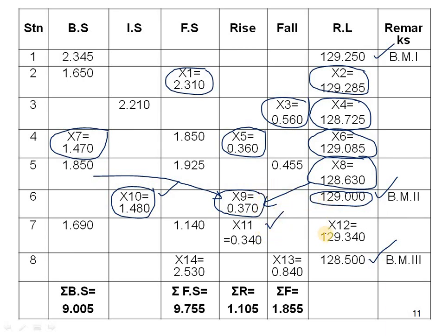To find X11 (rise at station 7): IS minus FS = 1.480 minus 1.140 = 0.340. So X11 = 0.340. To find X12 (RL of station 7): previous RL of station 6 (129.000) plus rise (0.340) = 129.340. So X12 = 129.340.